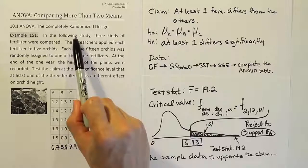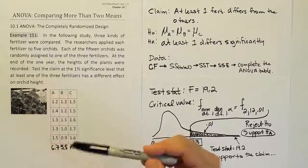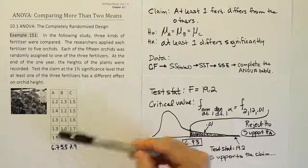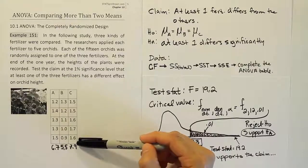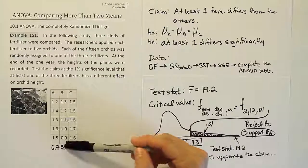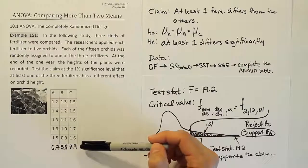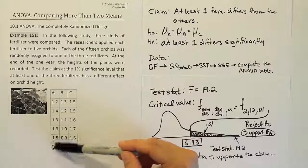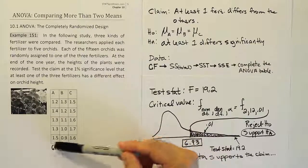But what we don't know from this test, what we cannot tell from a completely randomized designed ANOVA test, is this. I can't tell you if, for example, fertilizer A and fertilizer C are different. And I can't tell you if fertilizer A and fertilizer B are different. I can't say that. I mean, perhaps they're all different. Maybe C is significantly higher than A, which is significantly higher than B, right? Maybe they're all different.